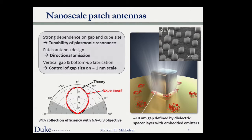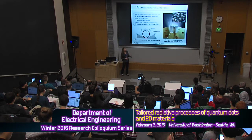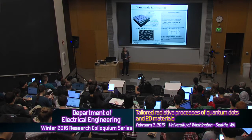The patch antenna design provides very directional emission — a single lobe normal to the surface. Experimentally we can collect about 84% of the emission into the first objective lens, much higher than emitters in glass where most goes into the substrate. Most importantly, this vertical gap structure allows bottom-up chemistry fabrication techniques providing control of gap size at single nanometer precision. You could use carbon chains or DNA assembly for control down to 0.3 nanometer scale.